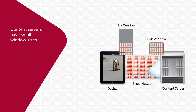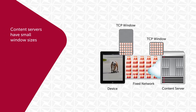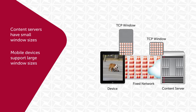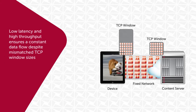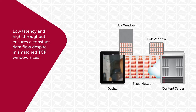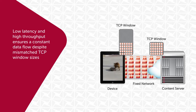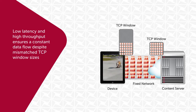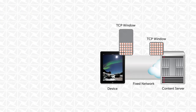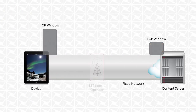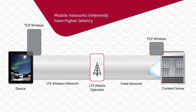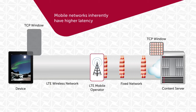Content servers typically have small window sizes, while mobile devices support large window sizes. In fixed networks, the disparity in window sizes is not a problem, since low latency in the network ensures a constant flow of data. Mobile networks, however, have much higher latency due to over-the-air data transmission. This is true even with the deployment of LTE.